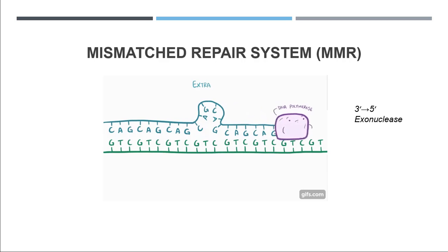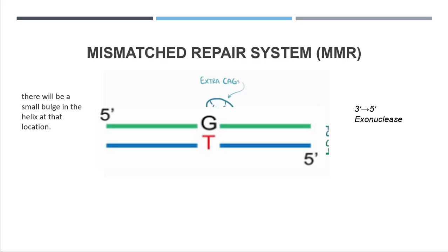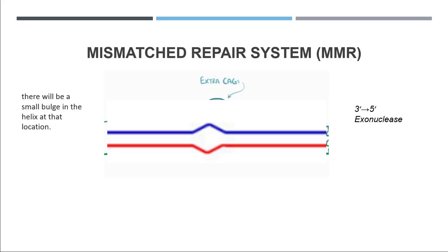If proofreading is skipped, we will have a small bulge present on the double helix. In this picture the DNA polymerase added several different nucleotides in the newly synthesized DNA, but most of the time only one nucleotide skips the proofreading mechanism — just like in this picture where thymine is added instead of cytosine in the newly synthesized strand, so the bulge will be present on both sides.